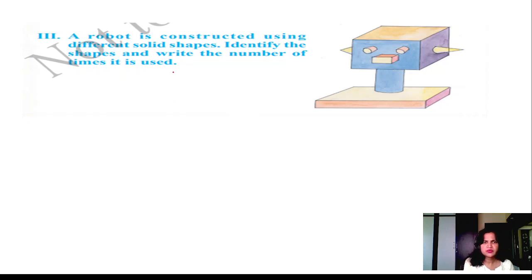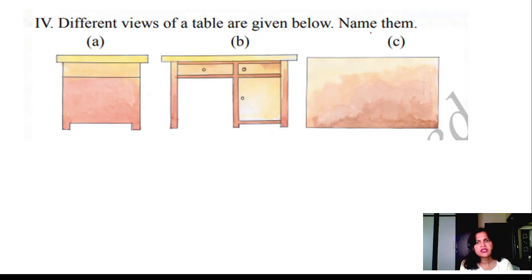Here, the objects are constructed using different solid shapes. Identify the shapes and write the number of items used. Three cylinders: 1, 2, 3 cylinders. Cones: 1, 2 cones. And cuboid: 1, 2, 3 cuboids. Different views of the table are given below. Name them: elevation, side view, top view.